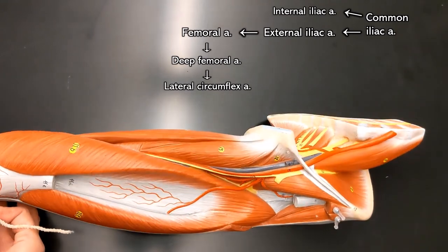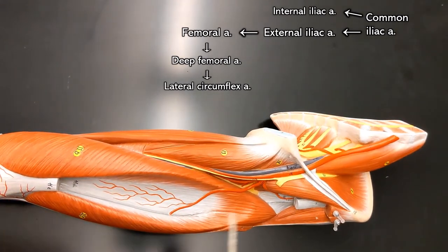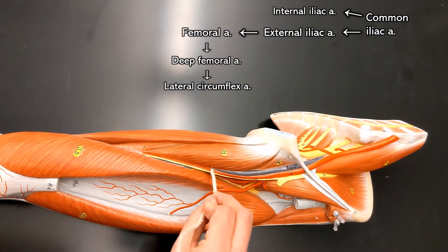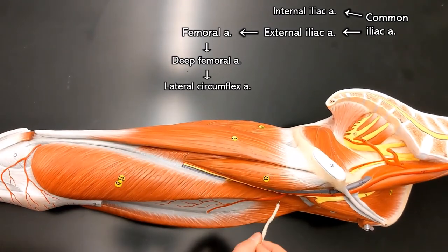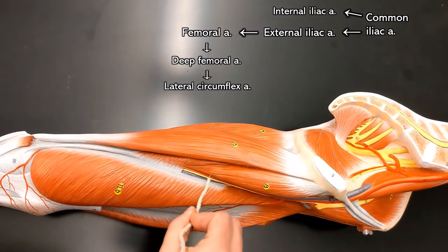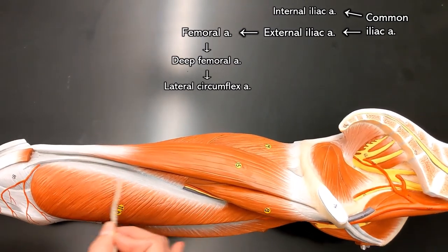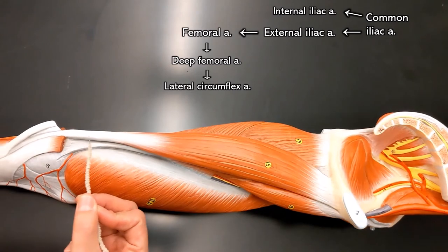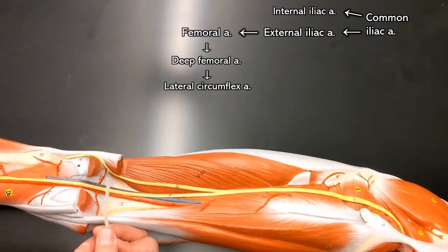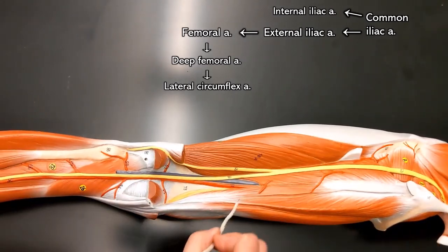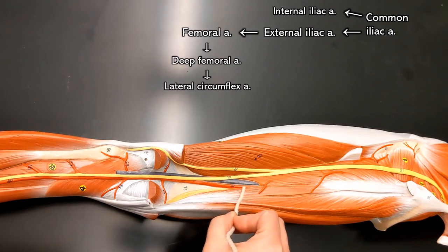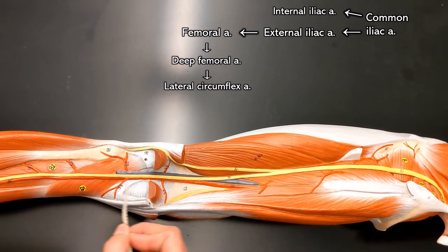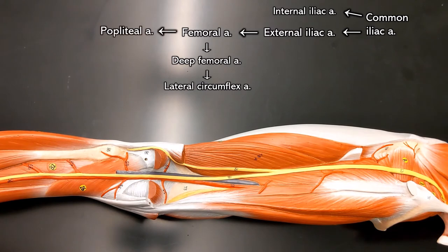Going back to the femoral, it passes down the medial aspect of your leg. So it's going down here, and if you follow it around, it's going to come to the back. Once it's in this region, it's the popliteal artery.